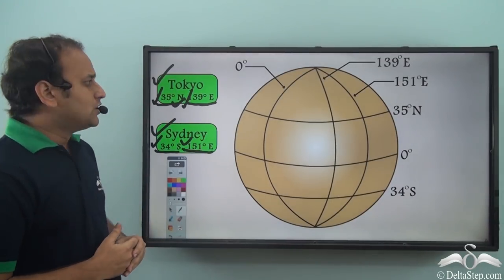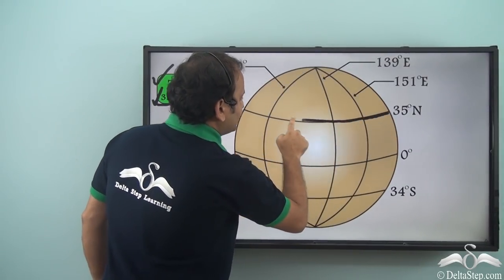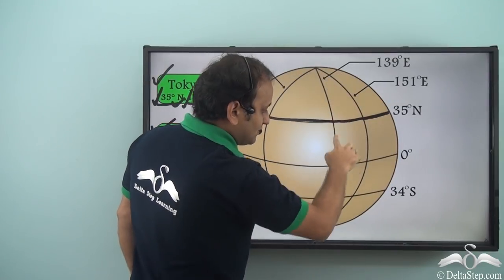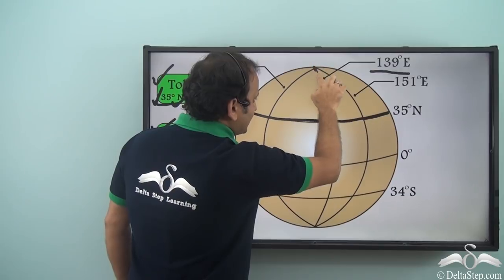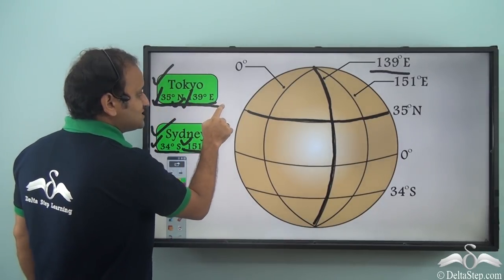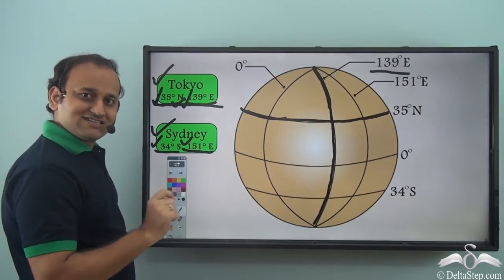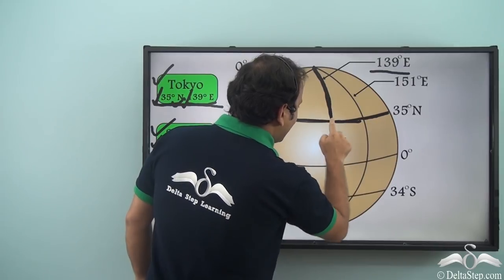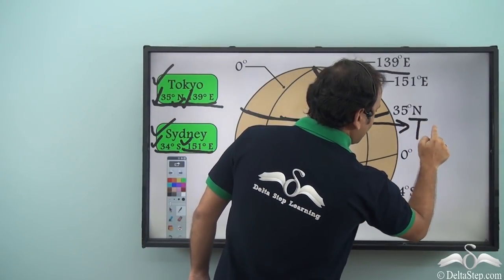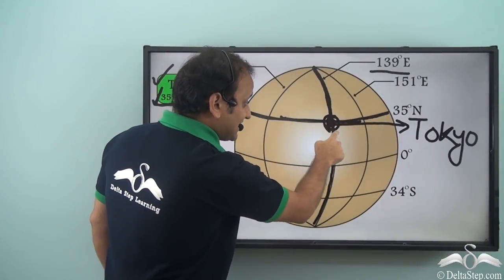Let's locate Tokyo on planet earth. We find the line for 35 degrees north — this is the line for 35 degrees north. Now we find 139 degrees east longitude — this line goes like this. Our location is at 35 degrees north and 139 degrees east, so the intersection point between this latitude line and this longitude line will be the location of our city. These two lines intersect here — and this is our city, Tokyo.